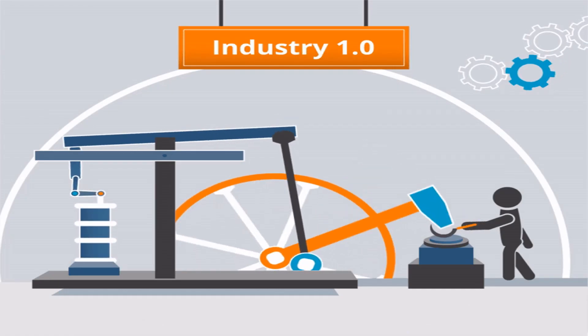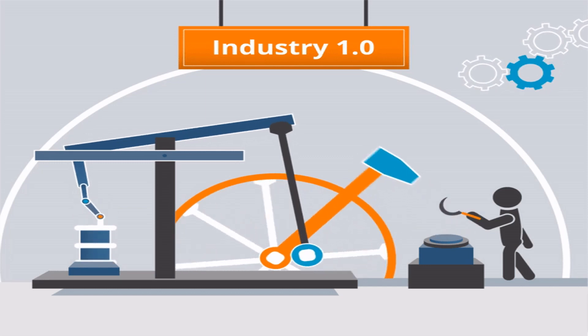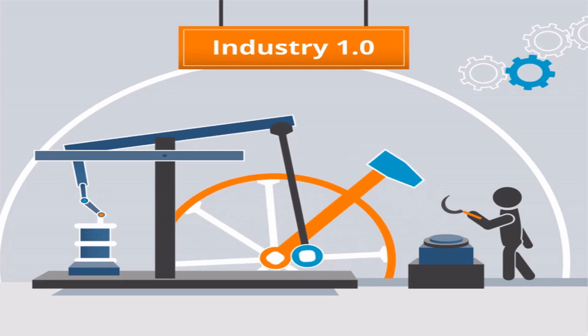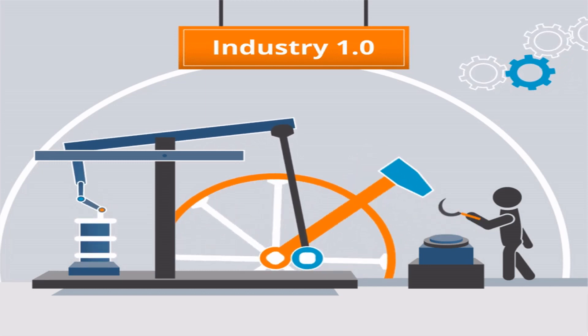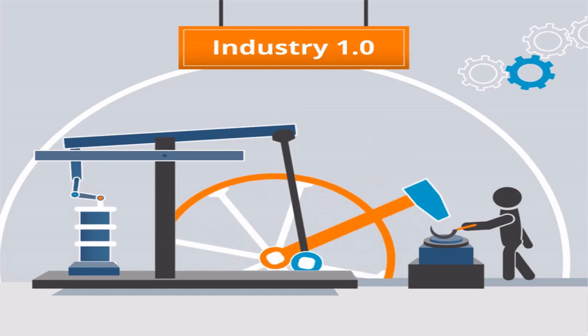Before jumping into Industry 4.0, let's take a look at Industry 1.0. It started around 1760 with the first mechanical loom. Water and steam power were used to create mechanical production facilities.